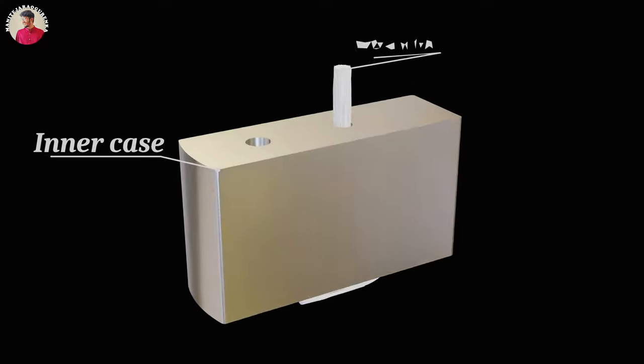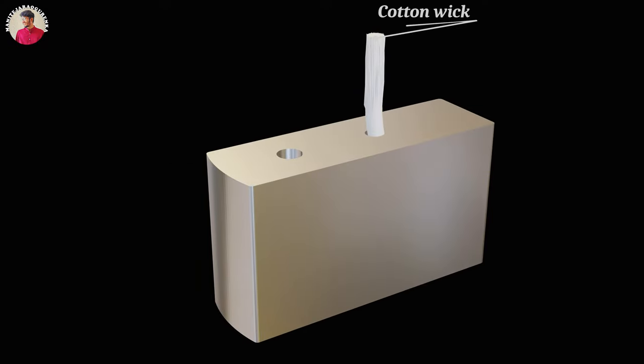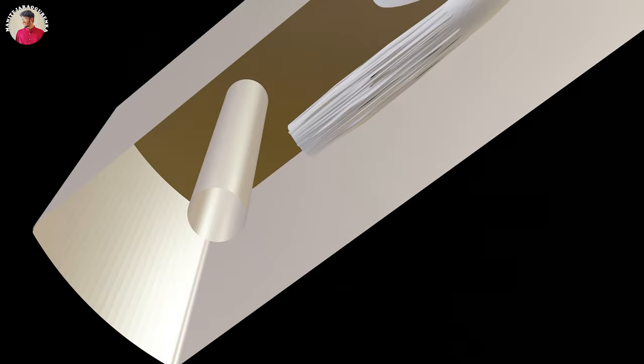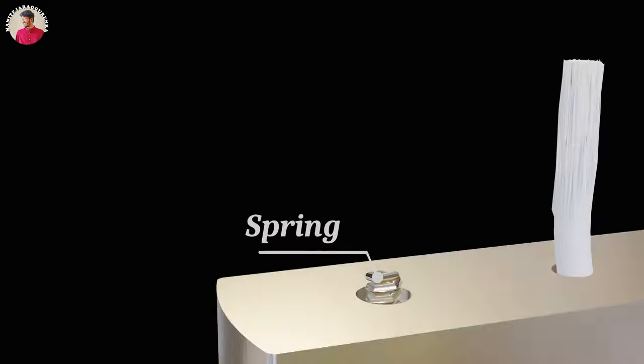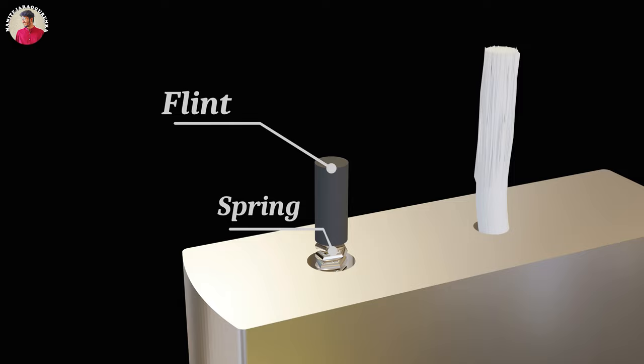In the inner case, a 4-inch long wick is inserted into one of the holes, and in the other hole, a long metallic tube is attached, in which the spring is passed, and on top of the spring, a cylindrical flint is fixed, with the support of the felt pad below the inner case.